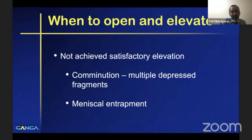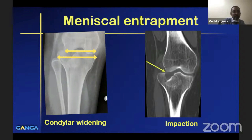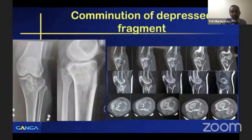Indications for open elevation include: inability to achieve satisfactory elevation, multiple depressed fragments, suspected meniscal entrapment, condylar widening, or impaction of the femoral condyle into the tibial condyle. When meniscal entrapment is suspected, we must be prepared to perform open reduction and release the entrapped meniscus.